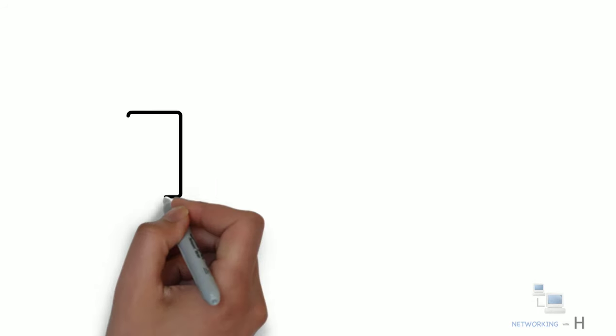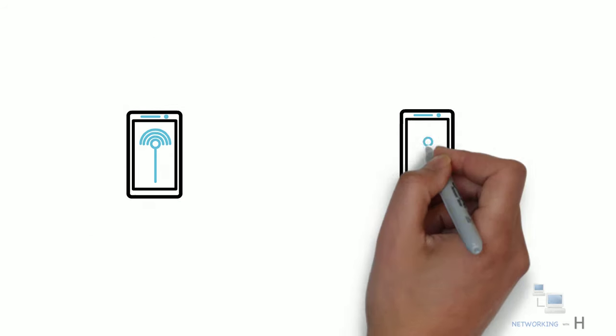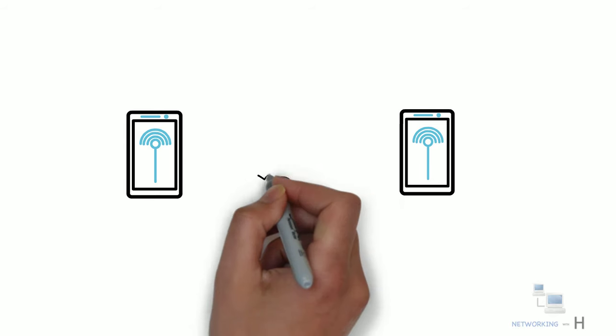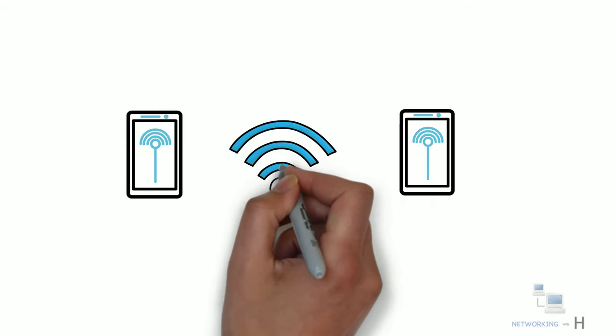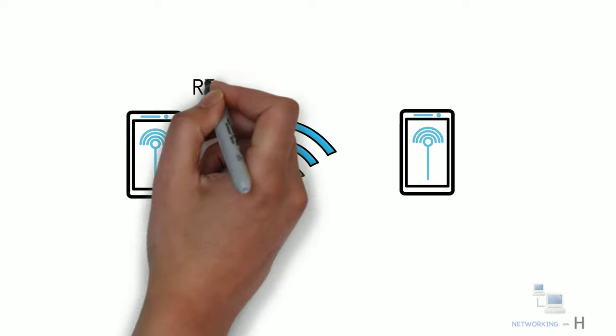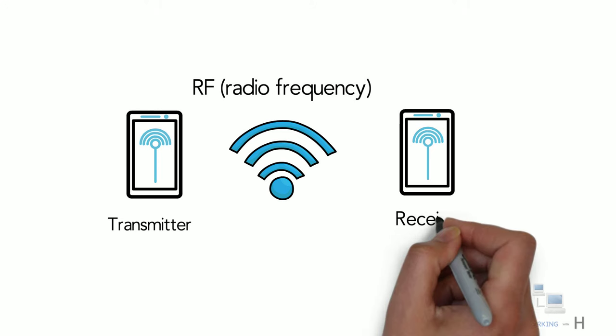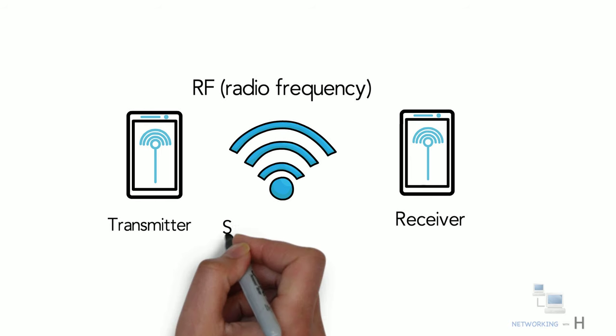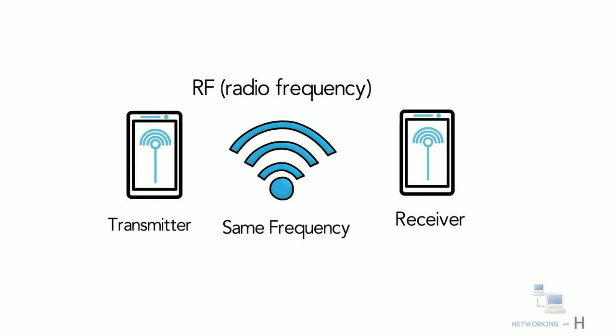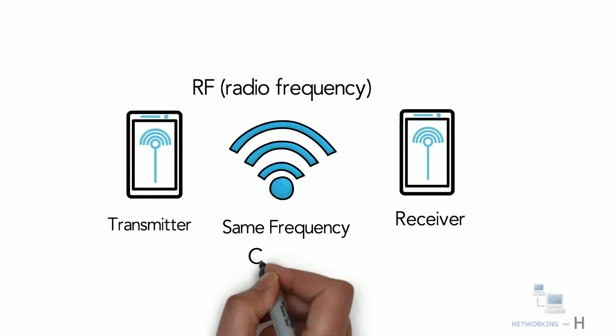To wrap this up, let me summarize it this way. Wireless communication takes place over free space through RF or radio frequency. One device, the transmitter, sends signals to another device, the receiver. Two devices, transmitter and receiver, must use the same frequency or same channel to be able to communicate with each other.